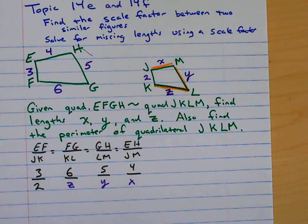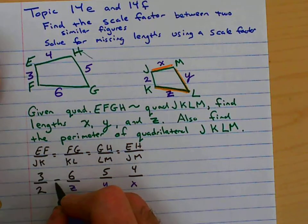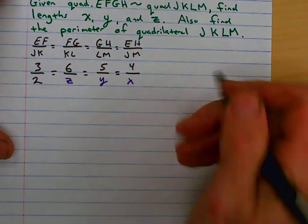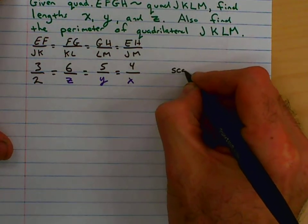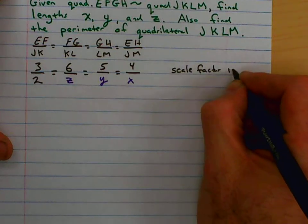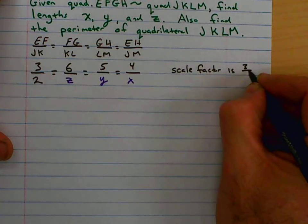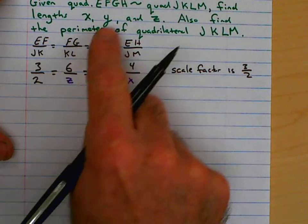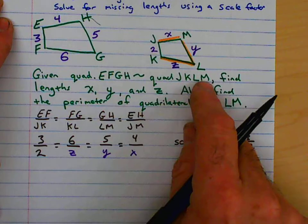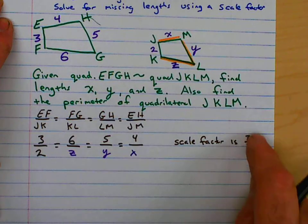So those are what we're looking for. And 3 over 2 is already a nice simplified scale factor. So we've found our scale factor. It's 3 over 2 when we compare EF over JK.